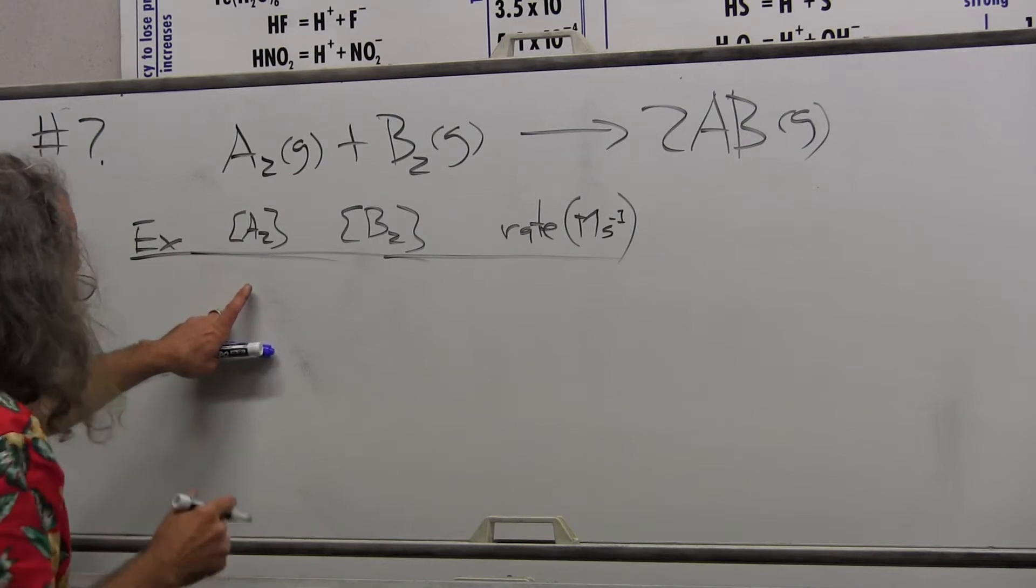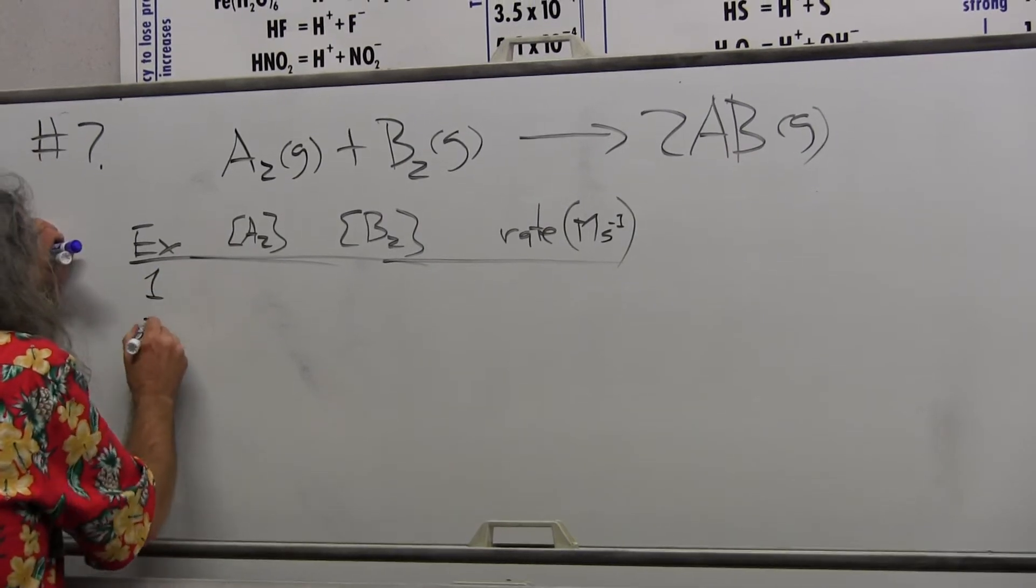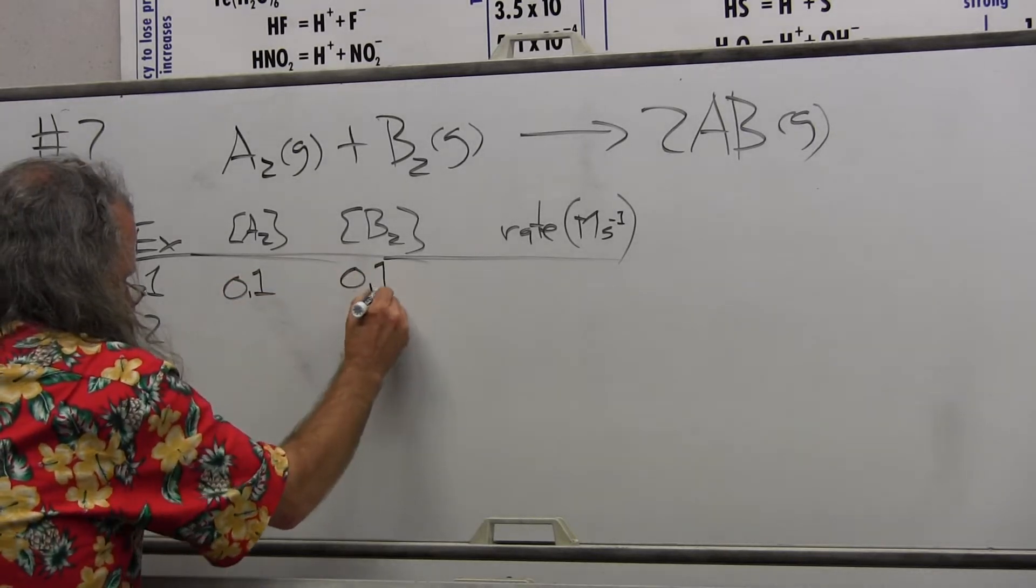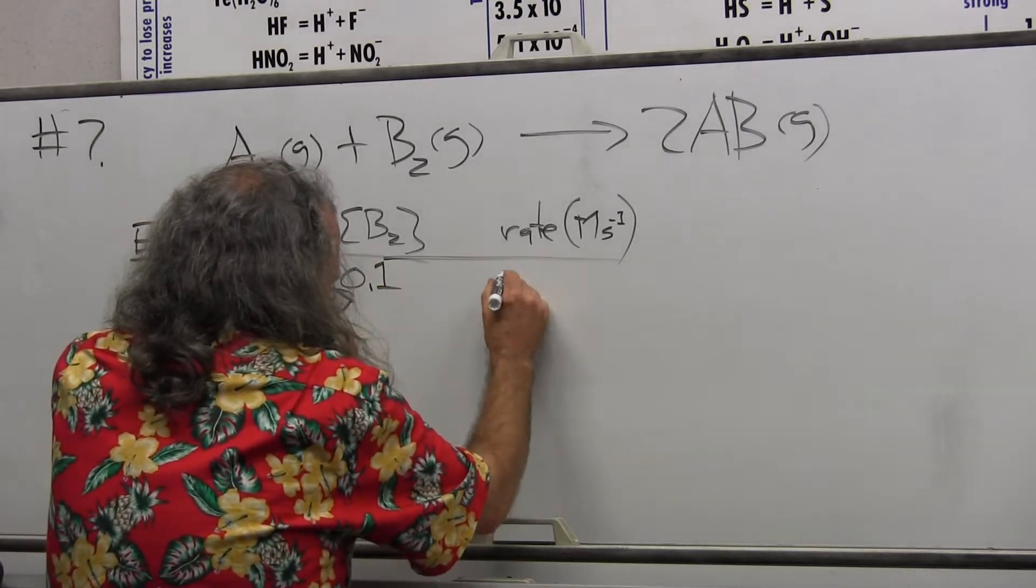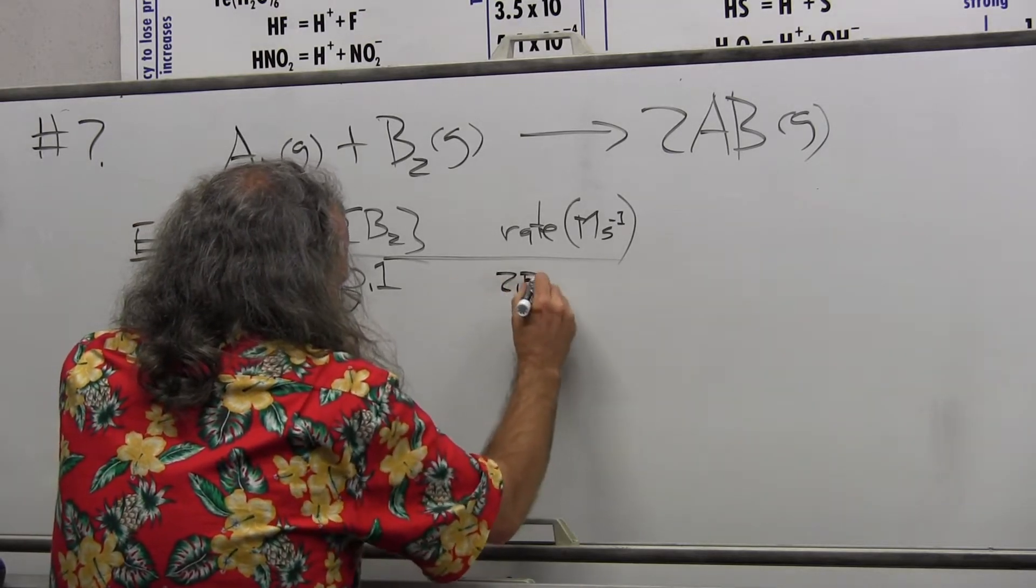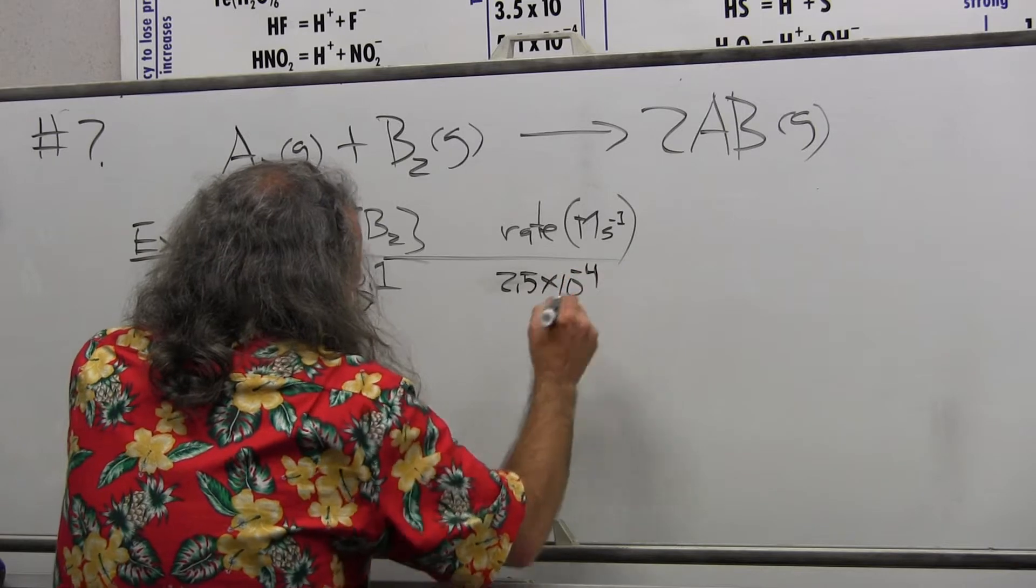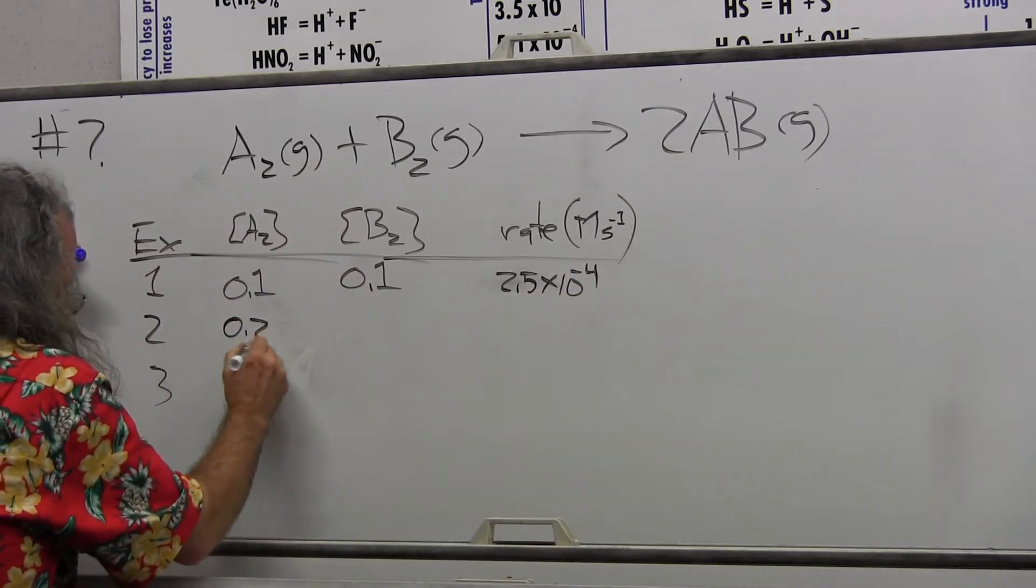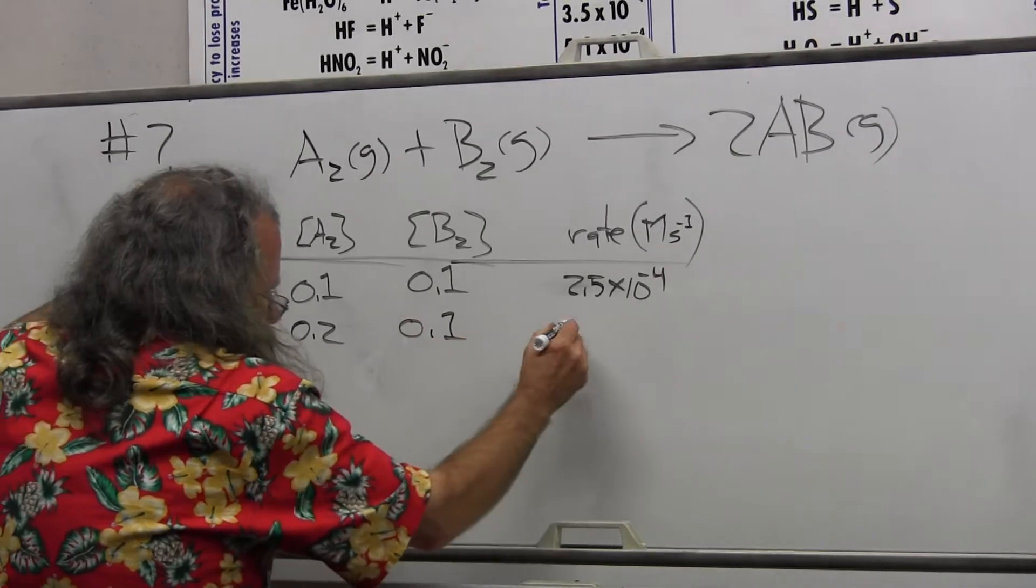What is the molarity here in experiment one? 0.1 in both of them. What's my rate? 2.5 times 10 to the minus 4. What's this one? Experiment two: 0.2 and 0.1.